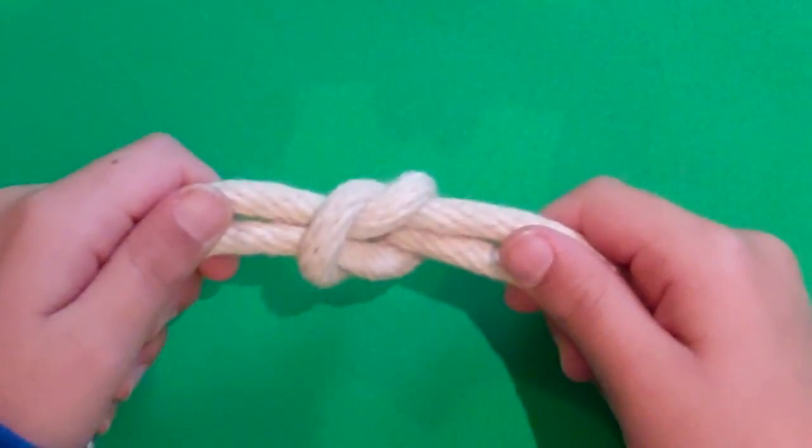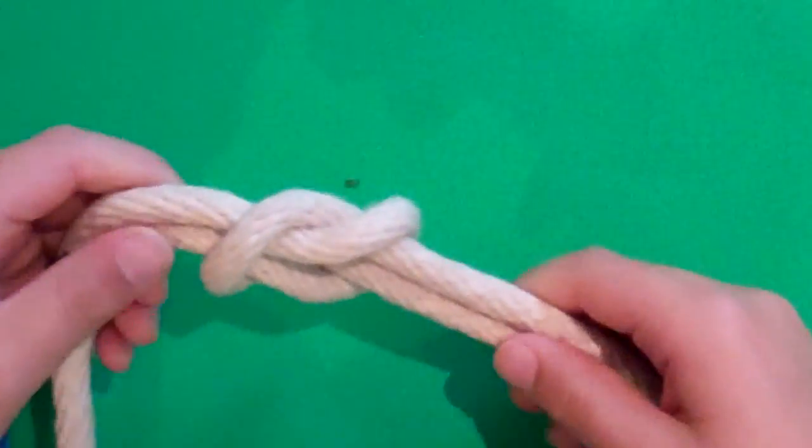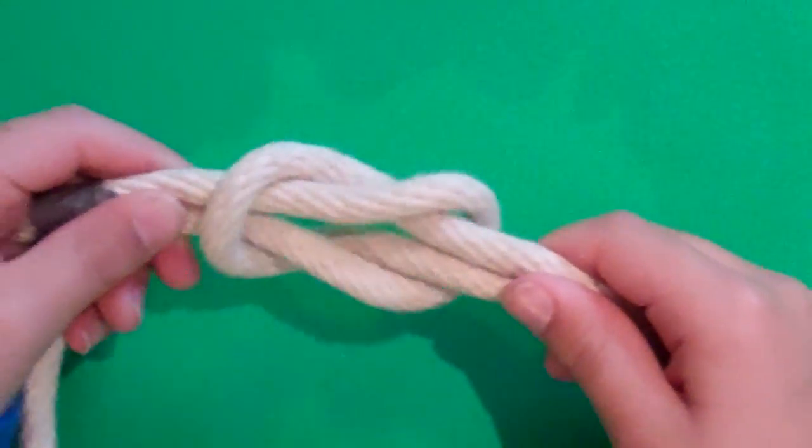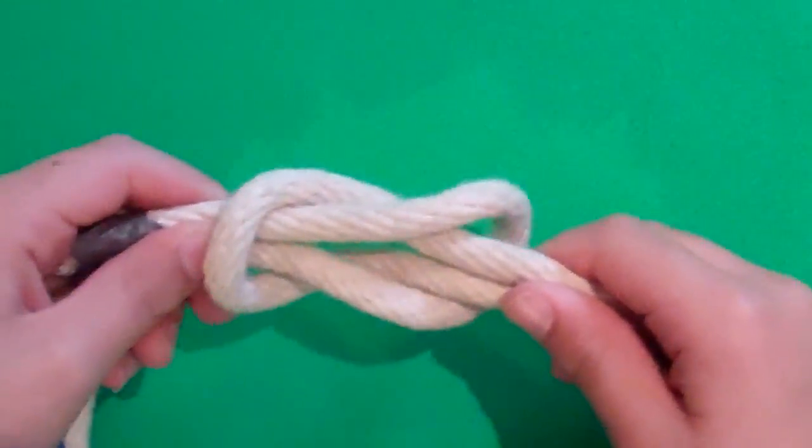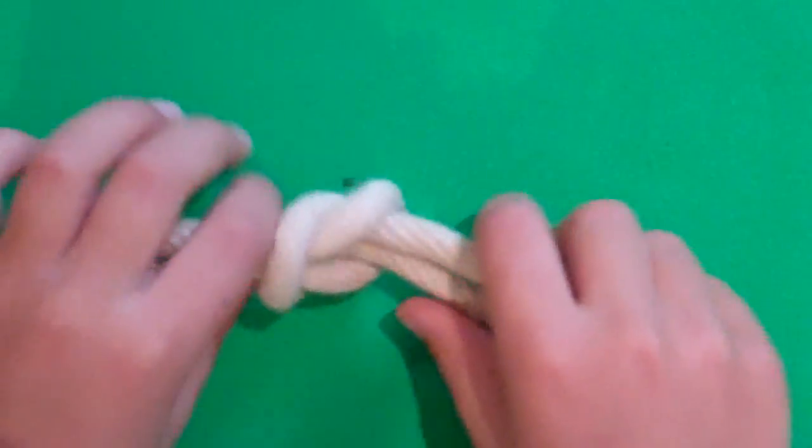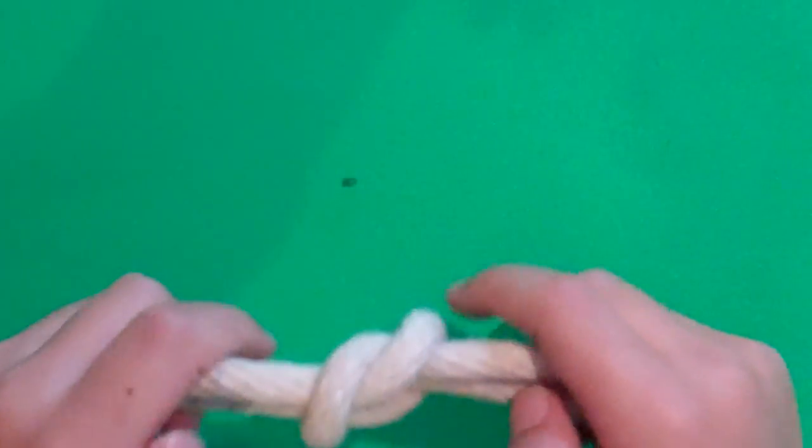The way that you can test a square knot is to push in and out, and you'll see that it very easily comes undone. That's another nice feature of it, is that a square knot is easy to undo. So there you have a square knot.